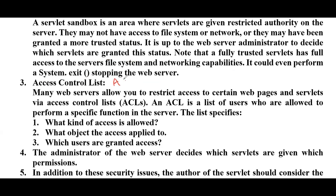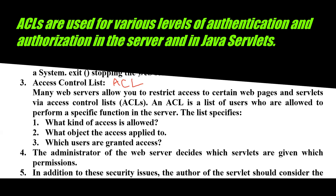Access Control List, which we call ACL, is another important security concept. Each web server has its own means of specifying an ACL. In general, a list of users is registered on the server and those usernames are used as an ACL. Some servers also allow you to add users to logical groups, so you can grant access to groups of users without specifying all of them explicitly. ACLs are extremely important as some Servlets can present or modify sensitive data and should be tightly controlled, while others only present public knowledge. An access control list is a list of users who are allowed to perform a specific function in the server, specifying what kind of access is allowed, what object the access applies to, and which users are granted access.